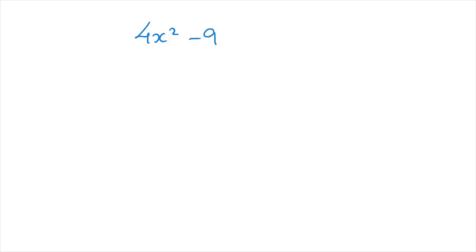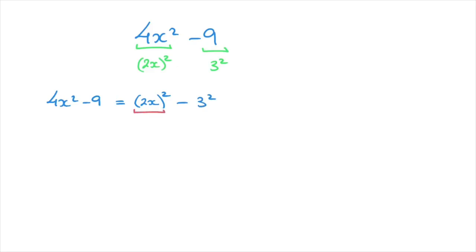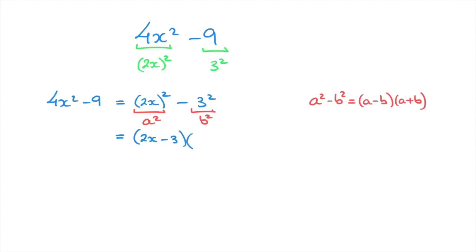Let's look at another example. Say we're given 4x squared minus 9 and asked to write this in factored form. The trick is to think of 4x squared as (2x) squared and 9 as 3 squared. So 4x squared minus 9 equals (2x) squared minus 3 squared. This is a squared minus b squared, and using the difference of two squares formula — a squared minus b squared equals a minus b times a plus b — we can write this as 2x minus 3 times 2x plus 3. We've just written this quadratic in its factored form.